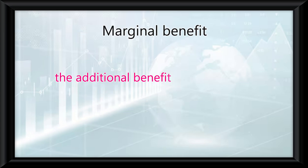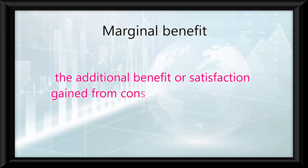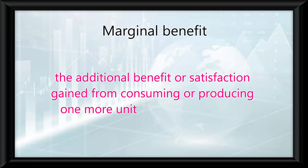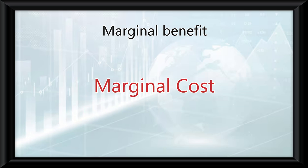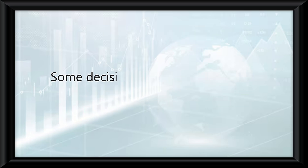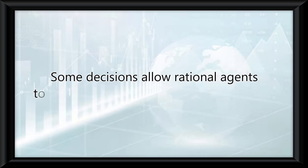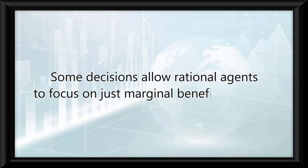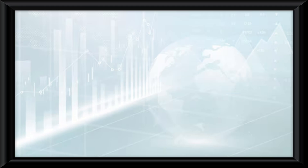Marginal benefit is the additional benefit or satisfaction gained from consuming or producing one more unit of a good or service. The marginal cost is the additional cost caused by producing that unit. Some decisions allow rational agents to focus on just marginal benefits and costs.